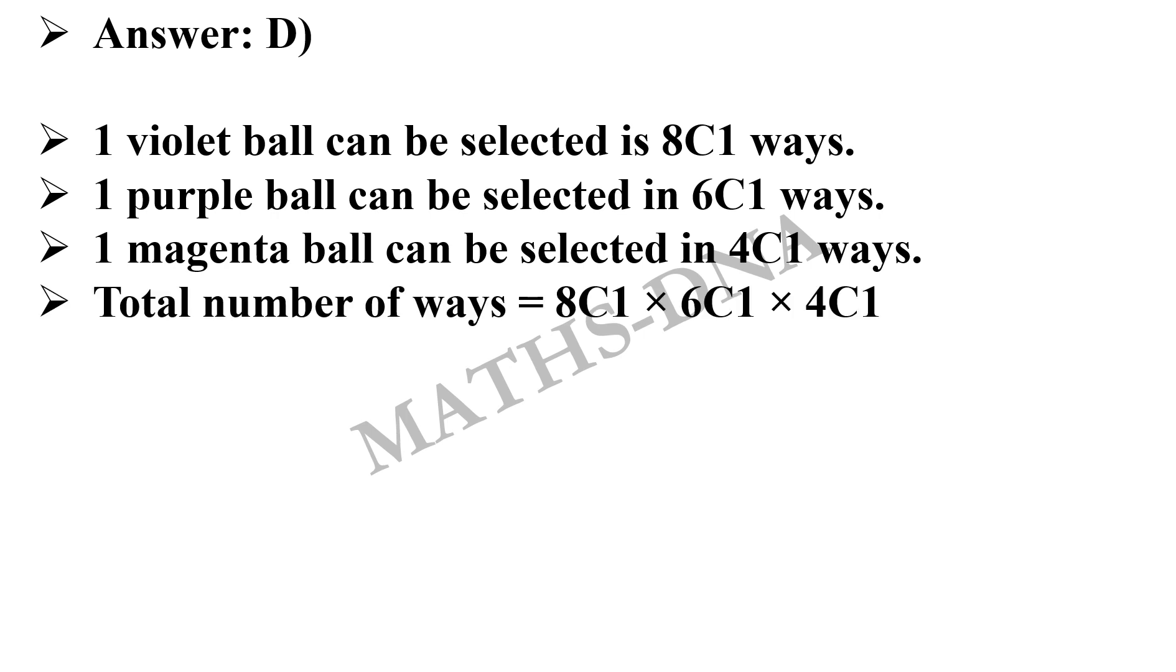This gives us the total number of ways: 8C1 × 6C1 × 4C1, which is equal to 8 × 6 × 4, and which equals 192.